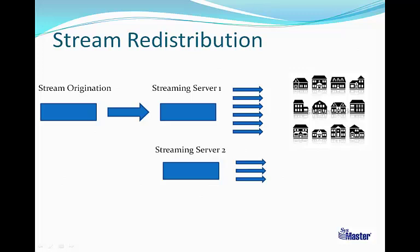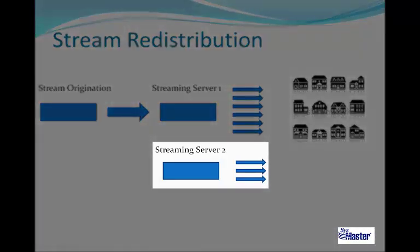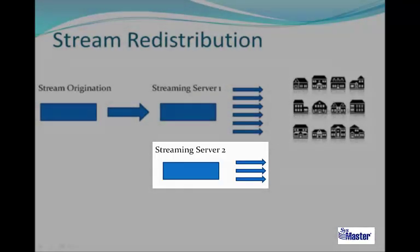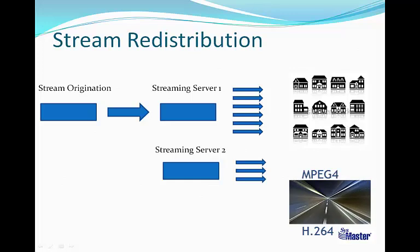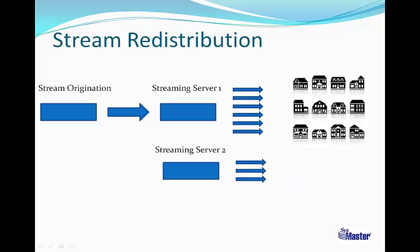If one streaming server reaches the limit of its subscriber connections, the streaming server will shift traffic to alternative servers to allow transparent flow and management of load balancing. The streaming server is designed to deliver high-quality video streaming over broadband wireline and wireless IP networks. It will support streaming of highly compressed MPEG-4 and H.264 video streams at very low bandwidth requirements. Such low bandwidth requirements enable providers to offer high-quality video services to subscribers over standard cable, DSL, or wireless lines.